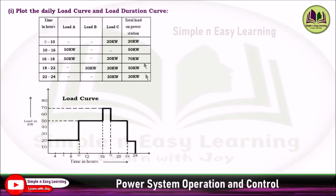From this total load on the power station, you can plot the load curve, and from the load curve you can plot the load duration curve as well. Take the maximum value — it is 70 kilowatt. The second maximum is 50 kilowatt, and the third is 20 kilowatt. Based on the hours, we arrange this load in descending order.